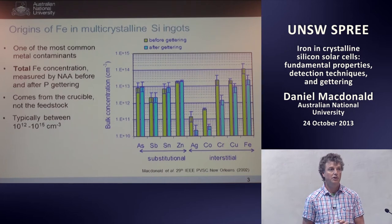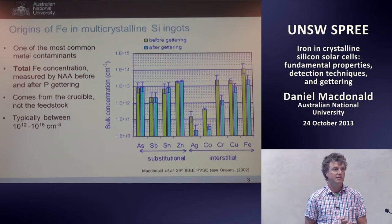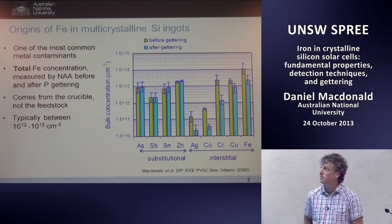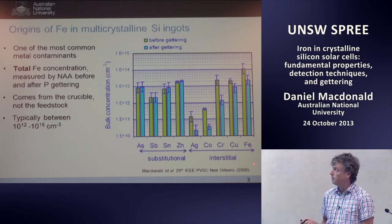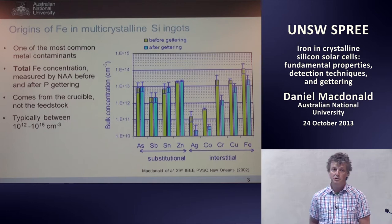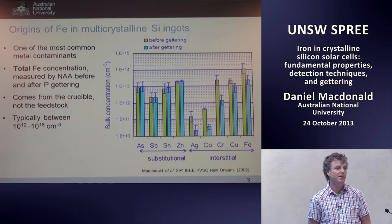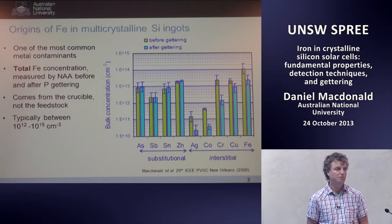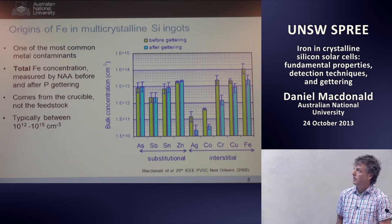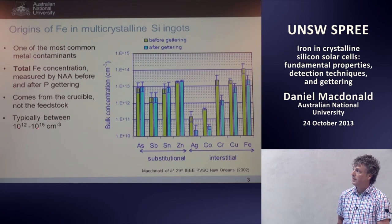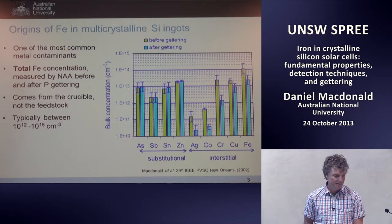It turns out that all of these impurities pretty much come from the crucible in which these ingots are grown — not from the feedstock, which is very clean. Concentrations of iron in multicrystalline ingots are in the range of around 10^12 per cm³, which is typical today. Whereas five or ten years ago, the ingots were much dirtier, more like 10^14 to 10^15.